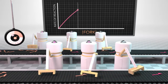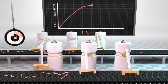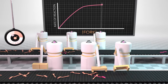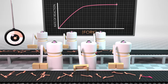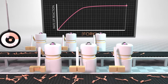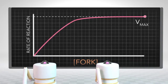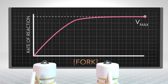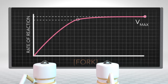However, there are only so many robots, and eventually the maximum number of robots will be active, and adding more forks won't change the number of sporks created. This state is called Vmax, the maximum rate of catalytic reactions. The substrate concentration where the reaction rate is half of Vmax is called the Michaelis-Menten constant, Km.